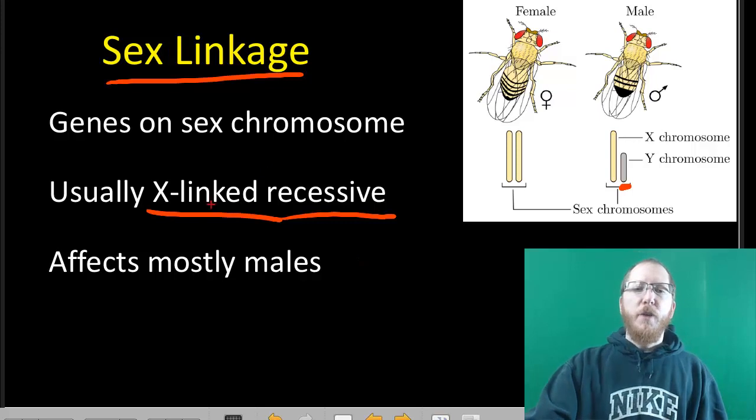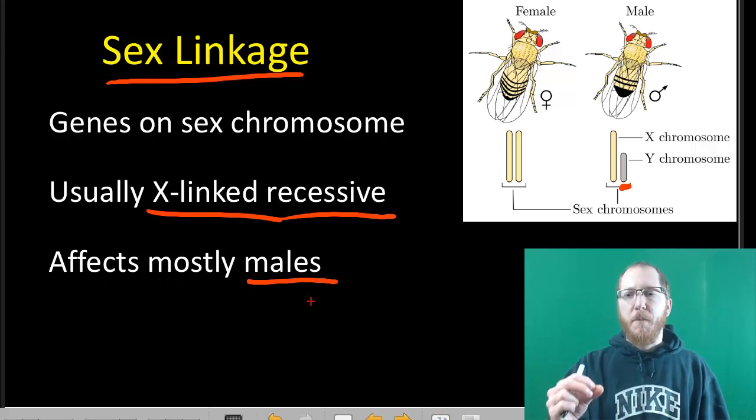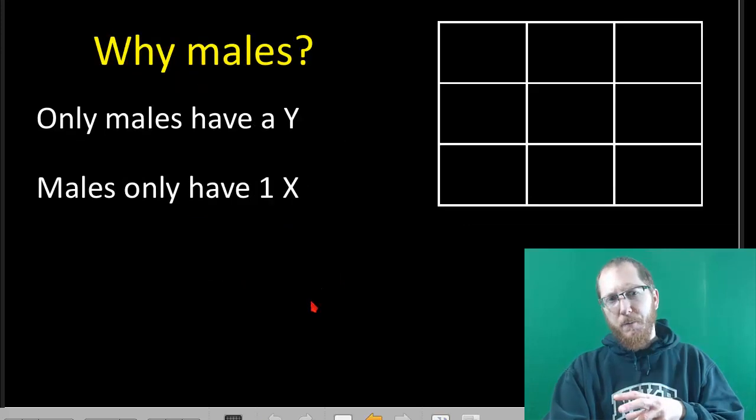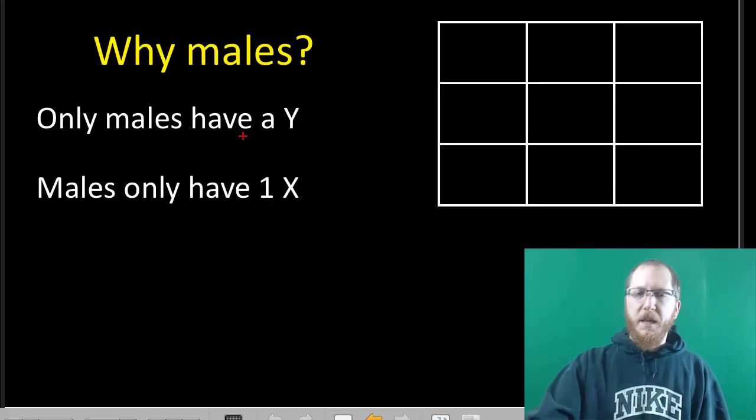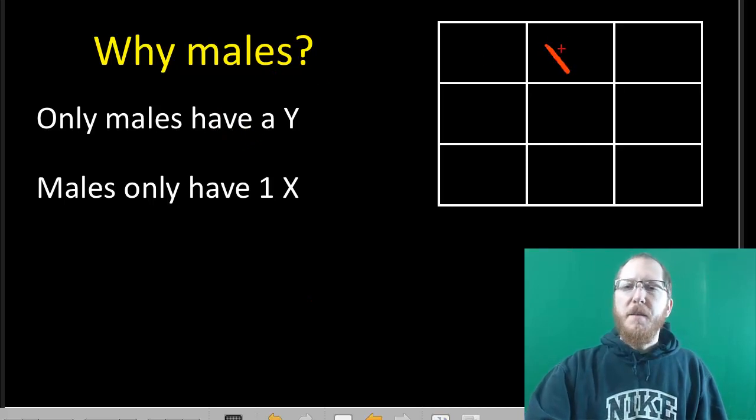So because these traits are typically X-linked recessive, they're going to affect mostly males. Females usually won't have to worry too much about this, even though it's X-linked, and you might think X female. And the rationale for this is females have two X's. So if we're doing a Punnett square, a female in the Punnett square is going to have two X's, the male's going to be XY.